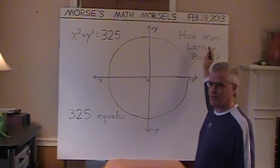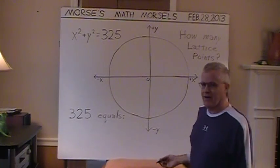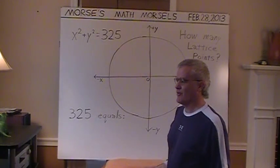And a little question with this graph is how many lattice points? Lattice points? What does that mean?